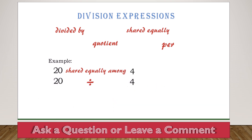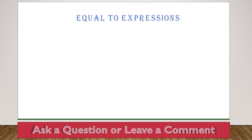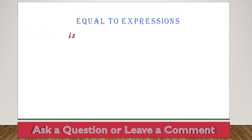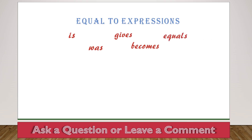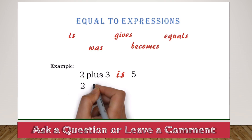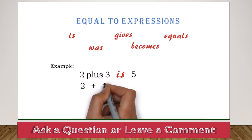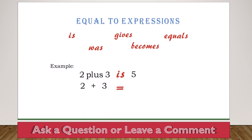Next, we look at expressions that imply equal to: 1. Is. 2. Was. 3. Gives. 4. Becomes. 5. Equals. So if we have '2 plus 3 is 5,' it's the same as 2 plus 3 equals 5. The word 'is' means equal to.